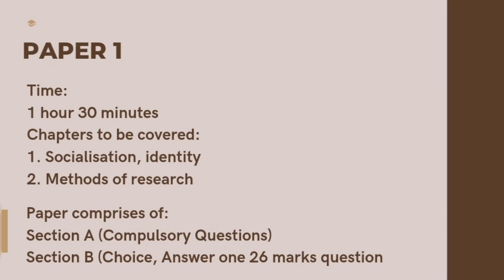Starting with paper one: the total time that you have is one hour and 30 minutes. The chapters that need to be covered are both compulsory — you need to cover both. There is chapter one, which is Socialization and Identity — the creation of social identity — and chapter two, which is Methods of Research.